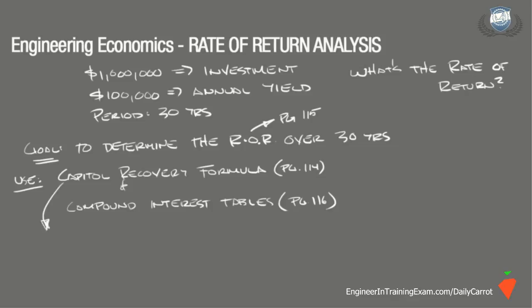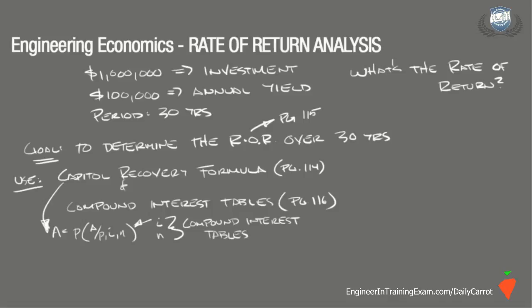The capital recovery formula written in functional notation for a uniform amount per interest period is A equal P times (A/P, i, n), where the term (A/P, i, n) can be defined using the given values for interest and the period, and the compound interest table starting on page 116 of the NCEES Supplied Reference Handbook.